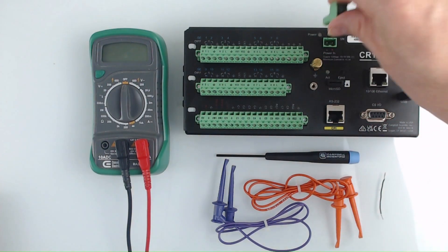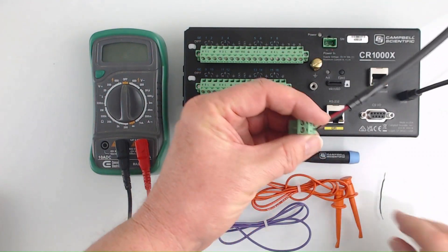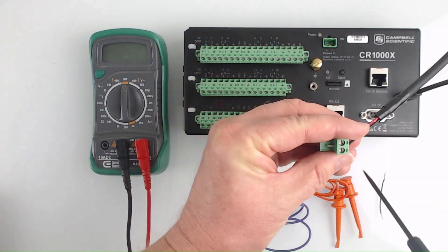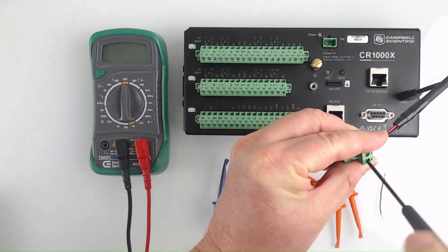Using the screwdriver, I remove the ground wire going into the G channel and replace it with a short jumper wire. This creates the break in the circuit that I need for connecting my multimeter.